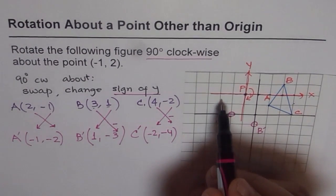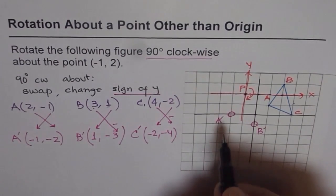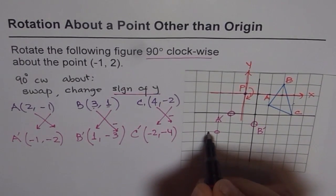That means 1, 2, 1, 2, 3, 4. So that is the point C for us.